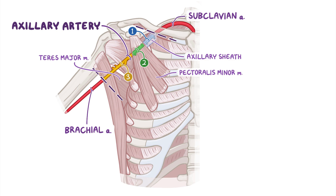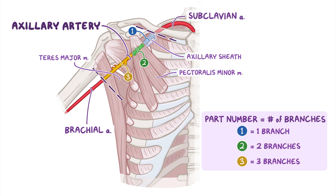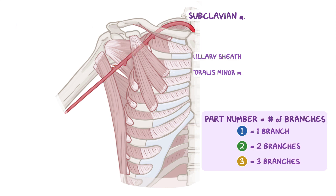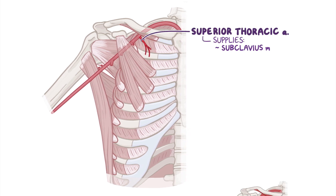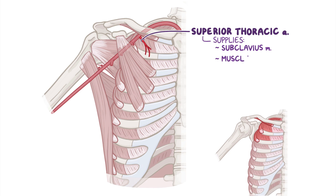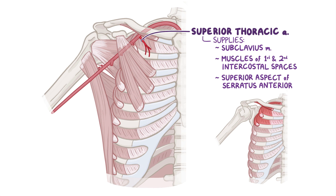One memory trick is that the part number also tells you how many branches it has. The first part has one branch: the superior thoracic artery, which supplies the subclavius muscle, the muscles of the first and second intercostal spaces, as well as the superior aspect of the serratus anterior.